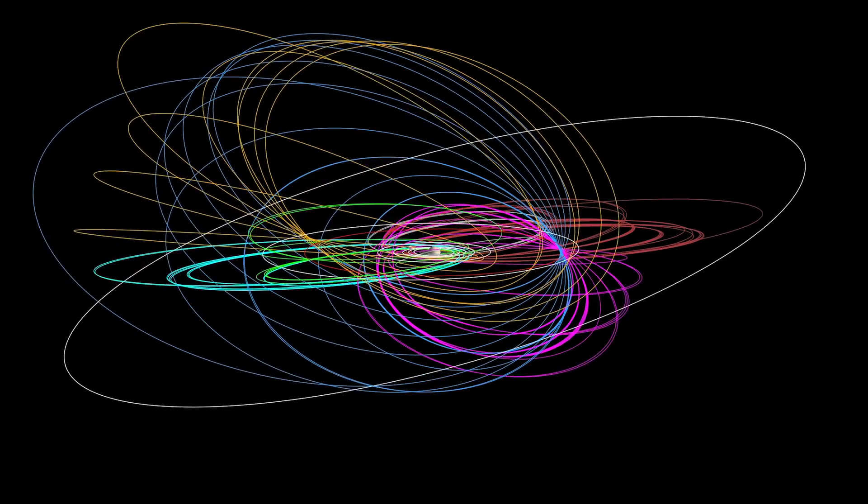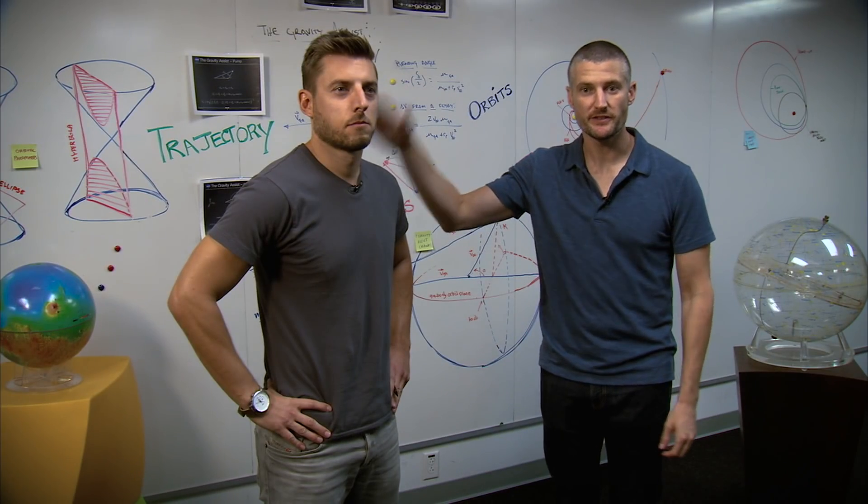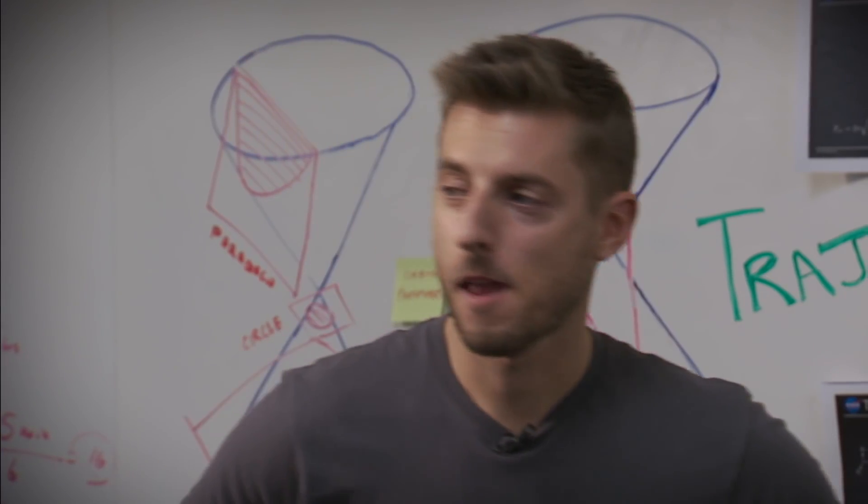Let's go talk to one of the engineers who is pivotal in the design of this flight path on the Cassini spacecraft. Okay, this is Brent. He's our astrodynamicist at JPL.